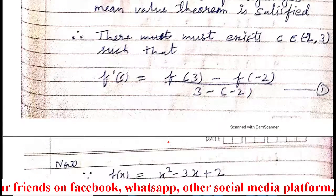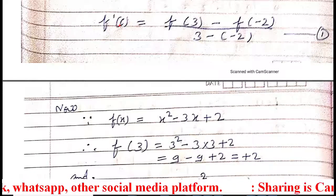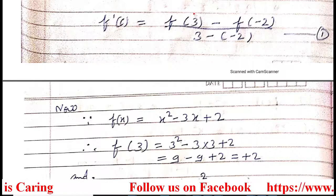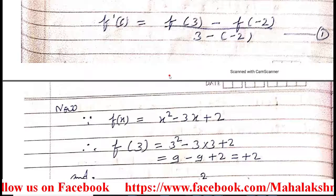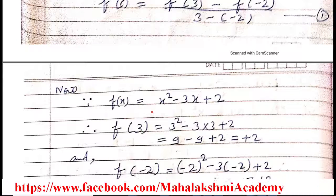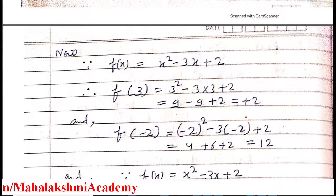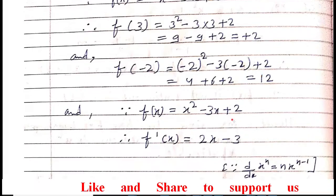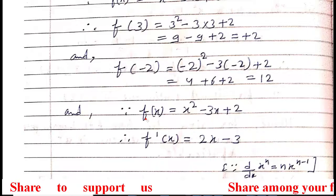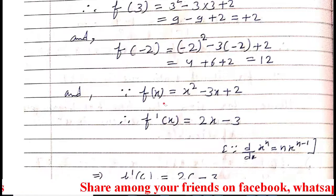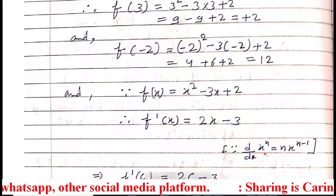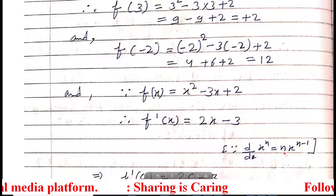To substitute the values, we need f'(c), f(3), and f(-2). First, calculating f(3): replace x by 3 in the given function and you get 2. For f(-2): replace x by -2 in the given function and you get 12. Now for f'(c), we first differentiate f(x) with respect to x. We use the formula d/dx(xⁿ) = n·xⁿ⁻¹.